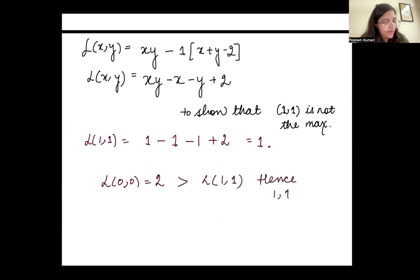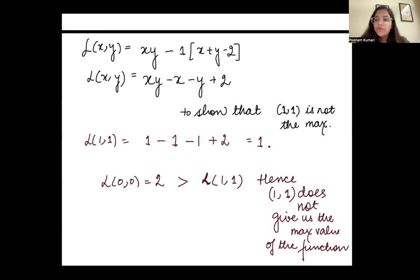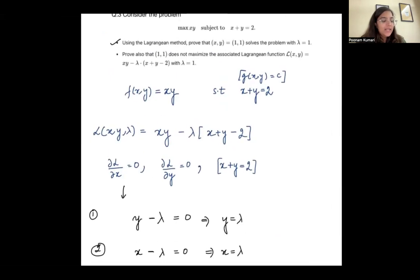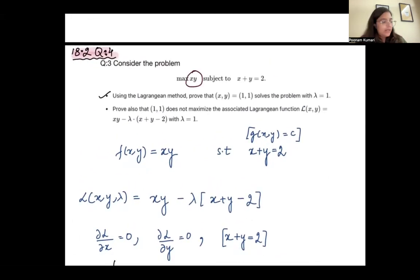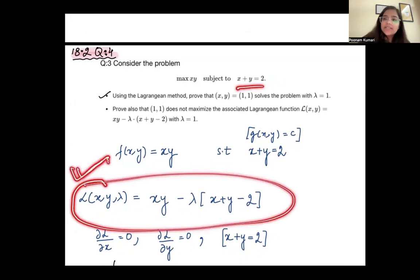Hence, (1, 1) does not maximize the Lagrange function. The Lagrange method is tied to the budget constraint — it tells you the max or min value of the objective function subject to the constraint, but it does not say anything about whether the Lagrange function itself is being maximized at that point.